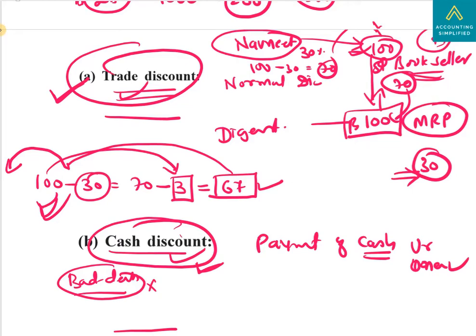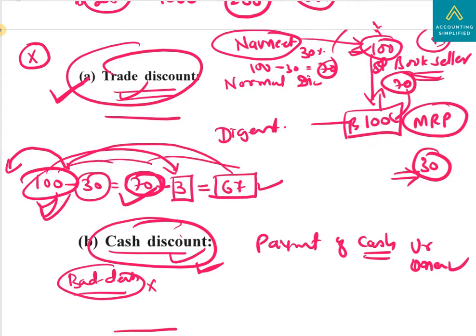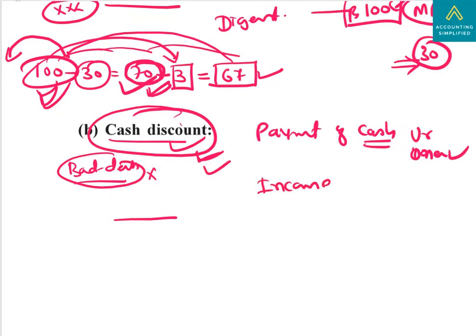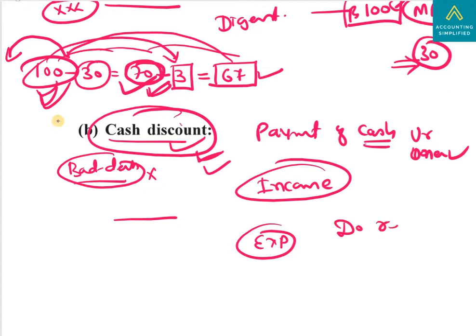Trade discount is not recorded in the books of account. The voucher from Navneet will be made for Rs. 70 only, not Rs. 100. But cash discount is recorded. When we receive cash discount, it is income for us. When we give cash discount, it is an expense for us. We do record cash discount in the books of account.